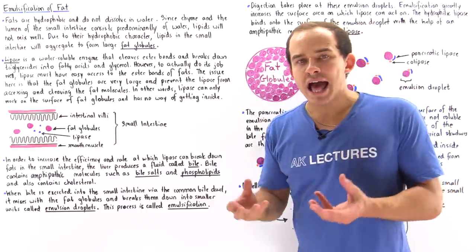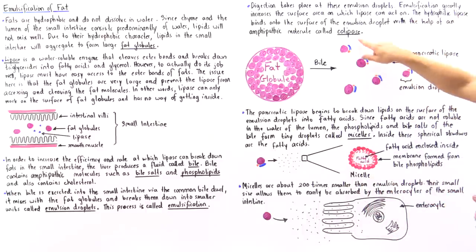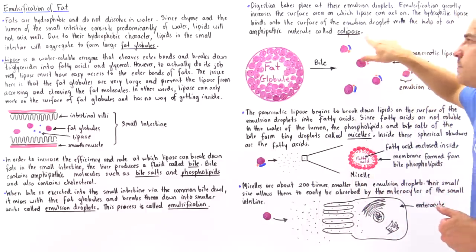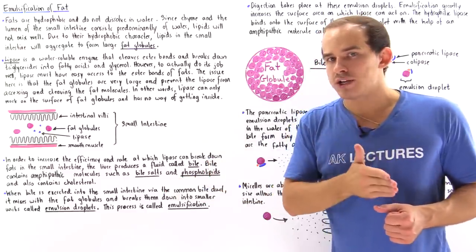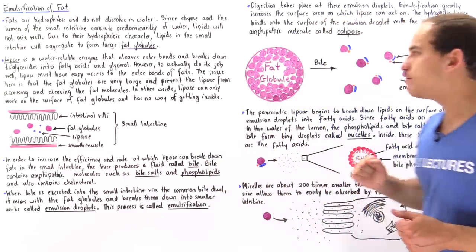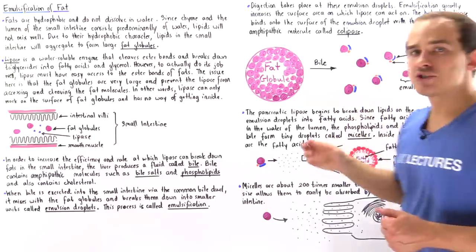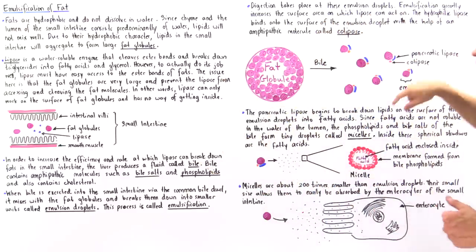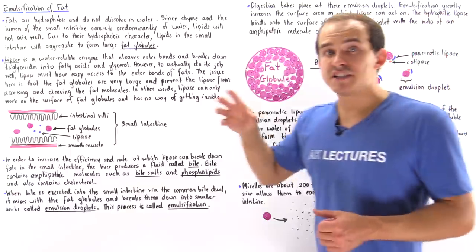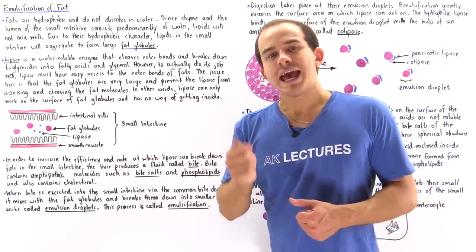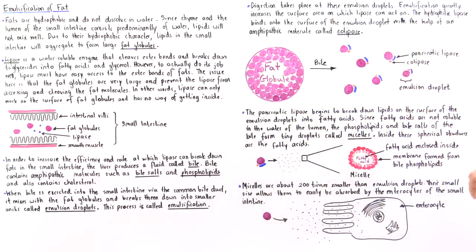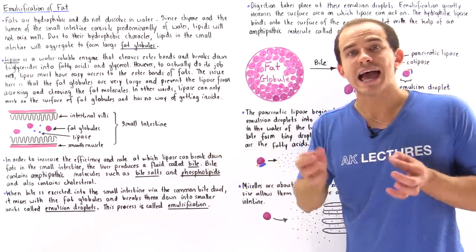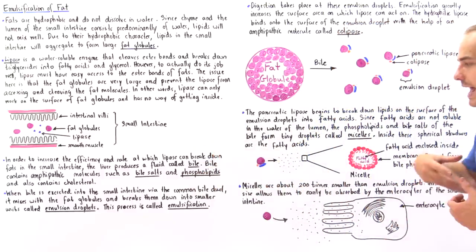The answer involves a special molecule known as colipase. Colipase is amphipathic — it has both a hydrophobic and a hydrophilic region. The hydrophilic region binds onto the lipase, while the hydrophobic region binds onto the surface of the emulsion droplets. As soon as the lipase binds, it begins digestion — breaking down the triglycerides on the surface into fatty acids and glycerol.